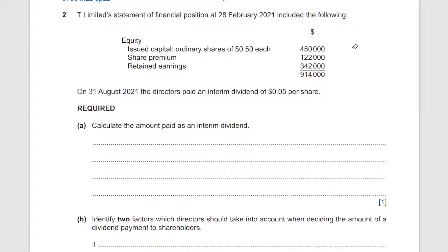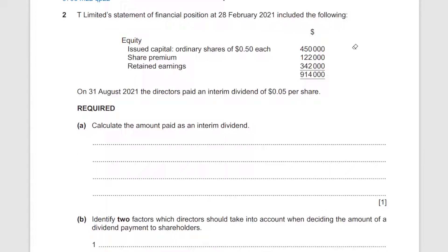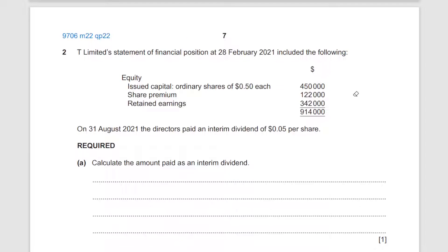Here we are: T Limited, statement of financial position at 2030 2021, includes the following. Equity — issued capital: ordinary shares of $0.50 each, in total worth $450,000 — plus share premium and retained earnings. This is as of 31st August 2021.